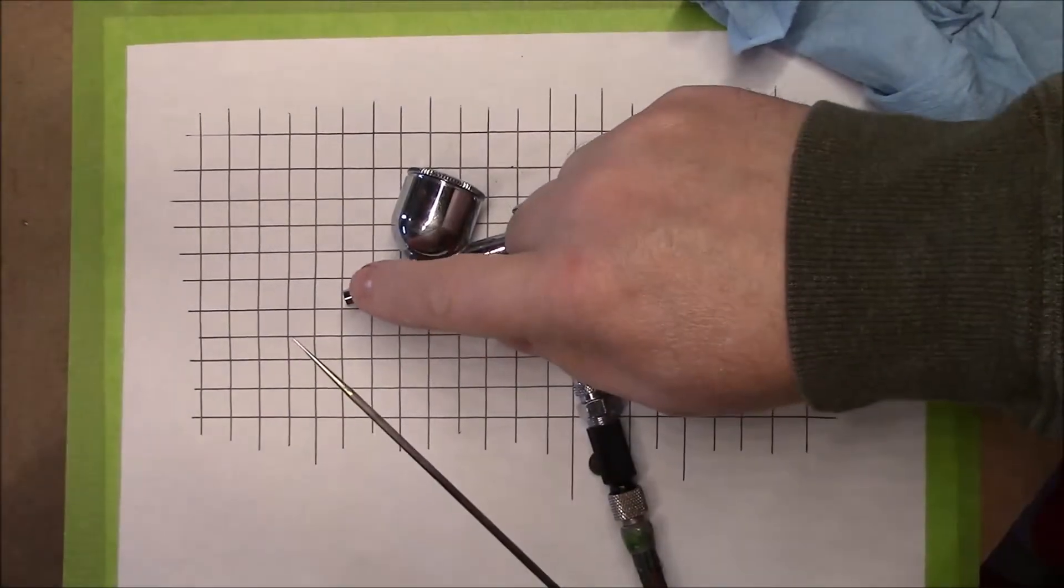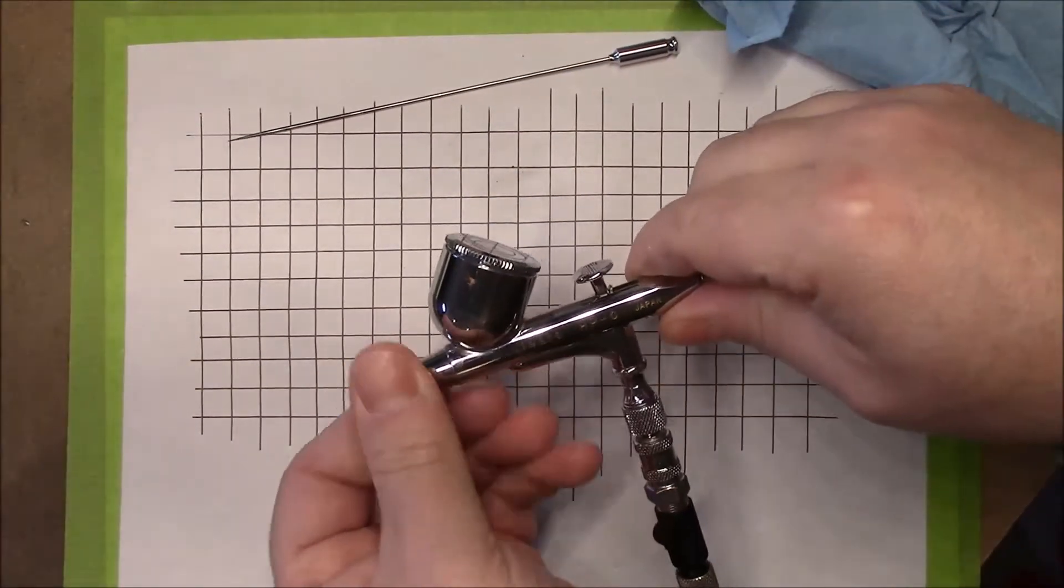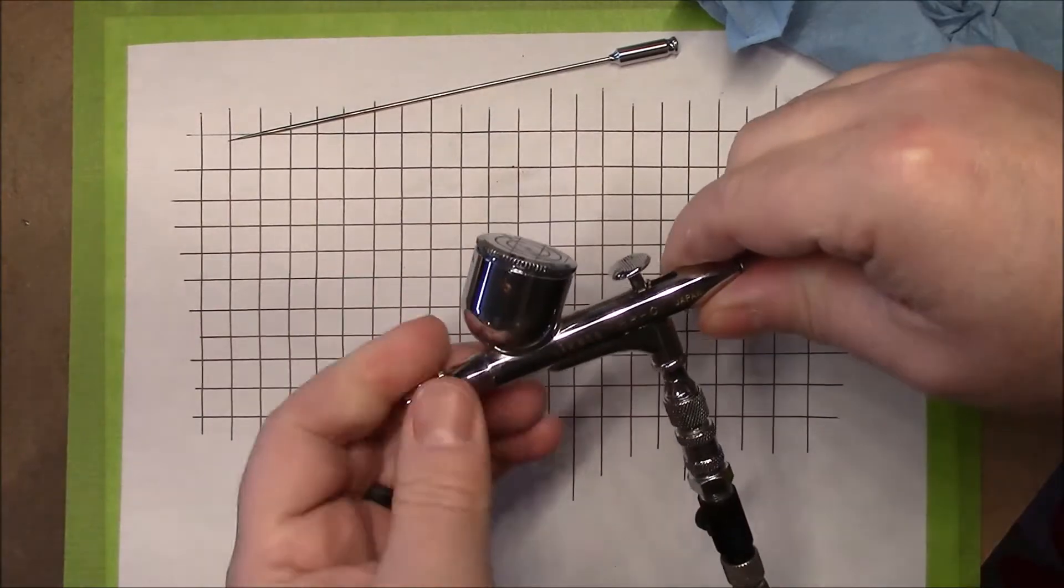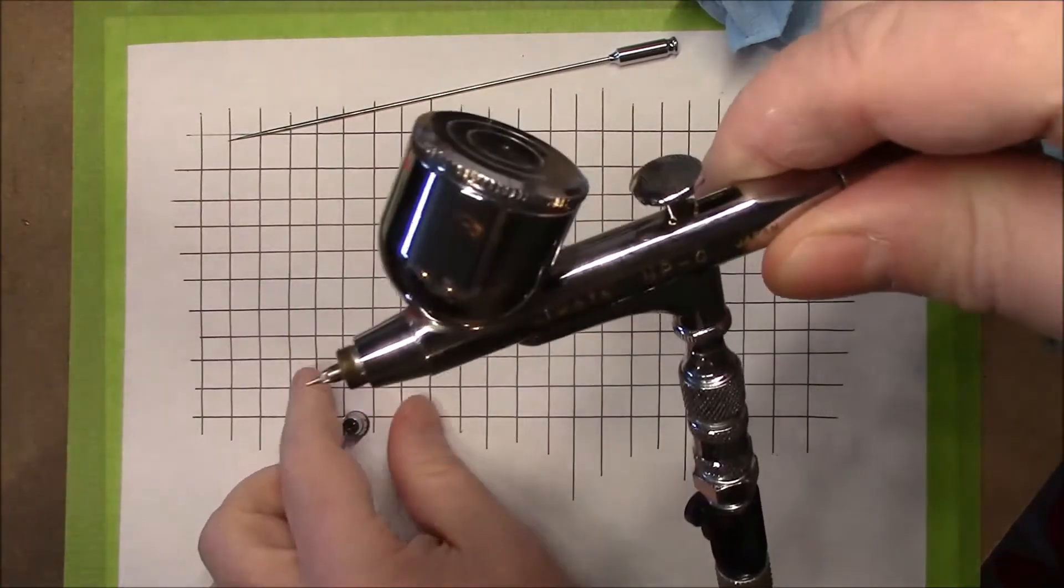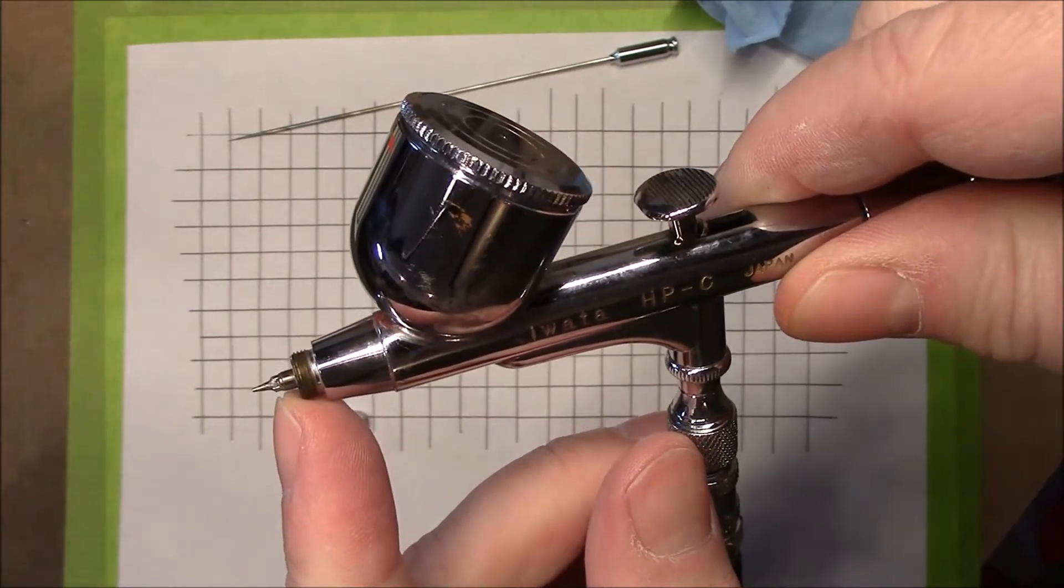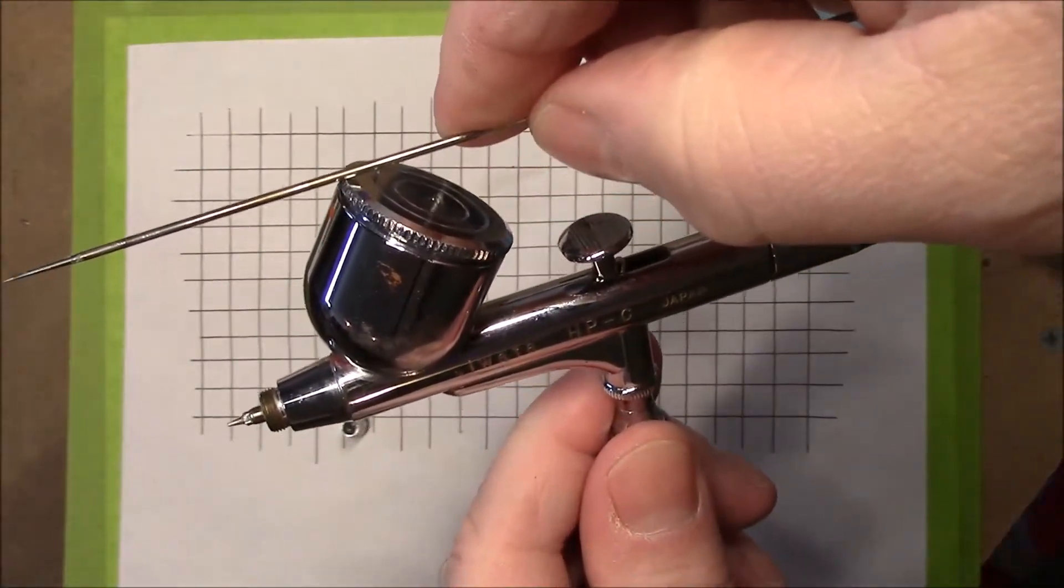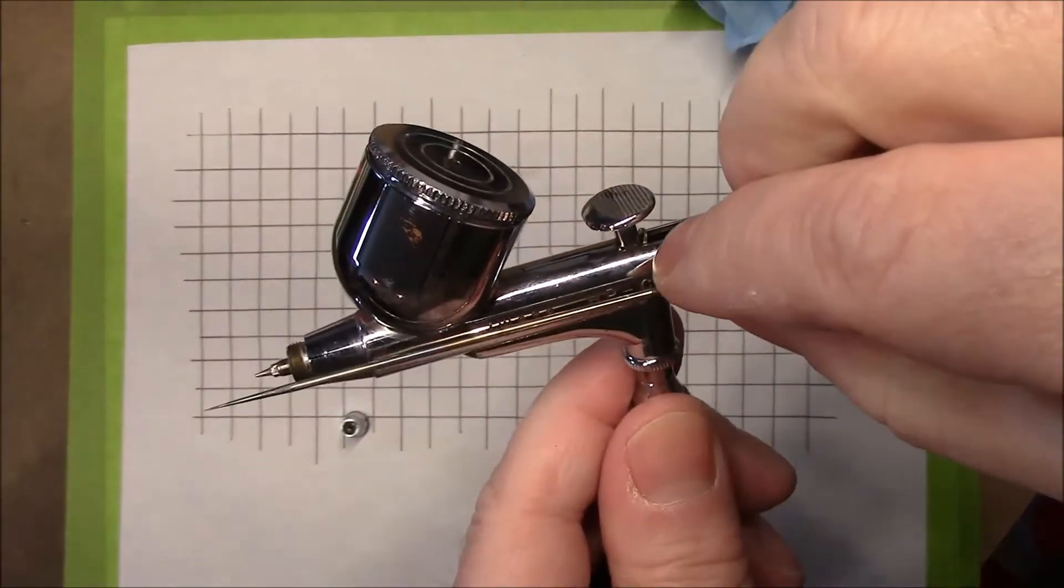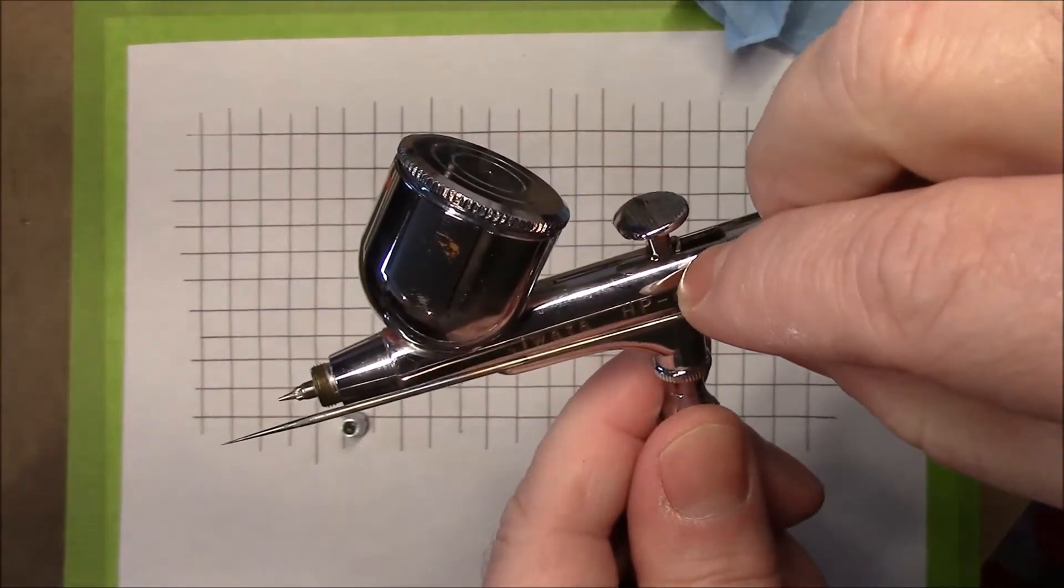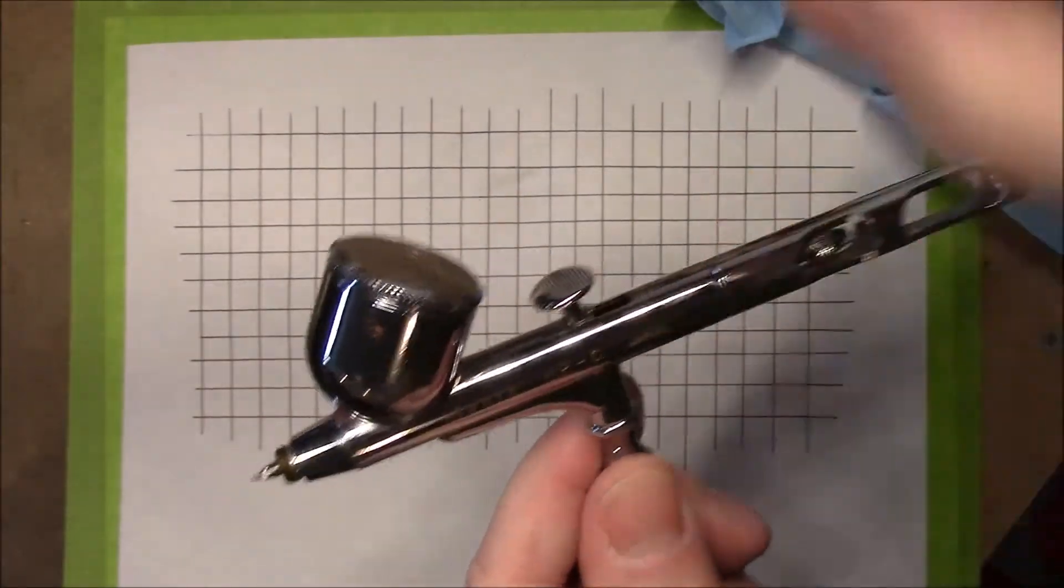And inside of the airbrush right here at the very end, there's a nozzle, which is that very end little piece right there. And it's also tapered. It's tapered at exactly the same taper as this needle. So when you push this needle through the end of that nozzle, they make a sealed fit. They fit perfectly together and nothing can get by them.